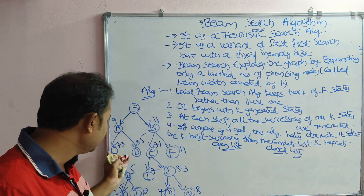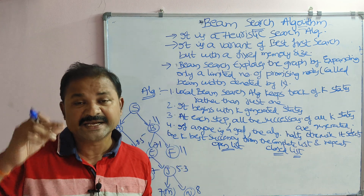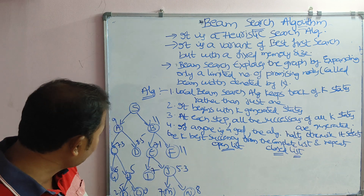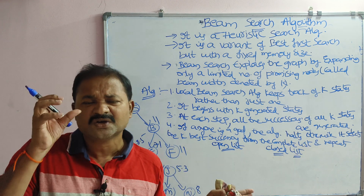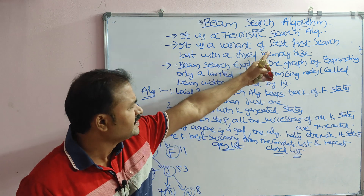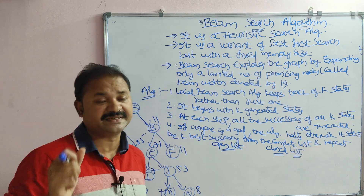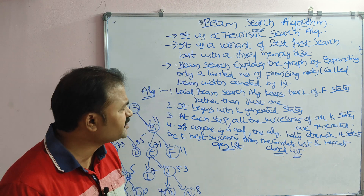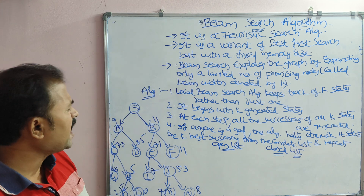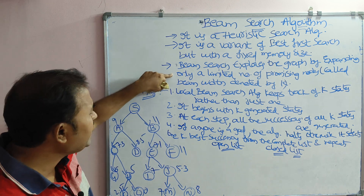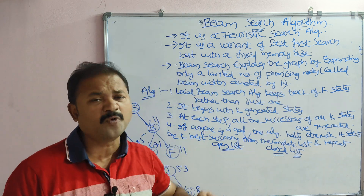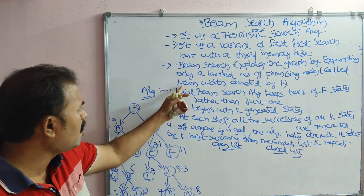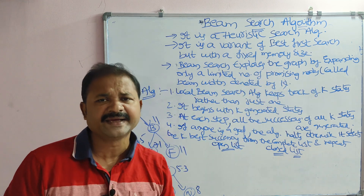In breadth-first search, we expand level by level: level zero, then level one, then level two. But in beam search, out of all the nodes we search only a few nodes — that's why the memory size is fixed. Beam search explores the graph by expanding only a limited number of promising nodes, which we call the beam width, denoted by k.